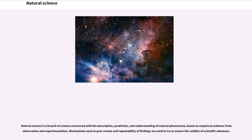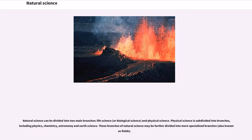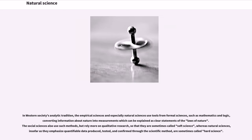Natural science is a branch of science concerned with the description, prediction, and understanding of natural phenomena, based on empirical evidence from observation and experimentation. Mechanisms such as peer review and repeatability of findings are used to ensure the validity of scientific advances. In Western society's analytic tradition, natural sciences use tools from formal sciences, such as mathematics and logic, converting information about nature into measurements which can be explained as clear statements of the laws of nature.